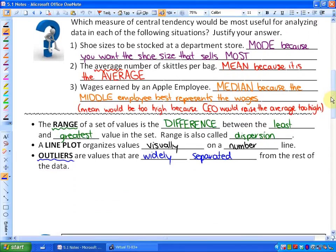A few more definitions and we'll get into the last example. The range of a set of values is the difference between the least and greatest value in the set, and the range is also called dispersion. So if I say range or dispersion, it means the same thing. Secondly, a line plot organizes values visually on a number line, and outliers are values that are widely separated from the rest of the data.